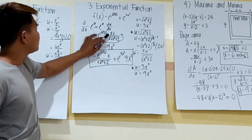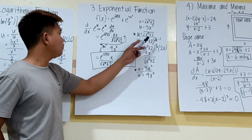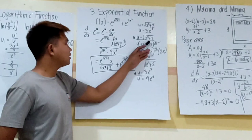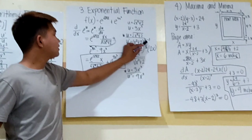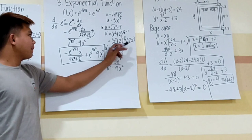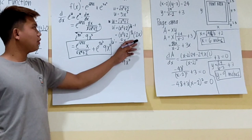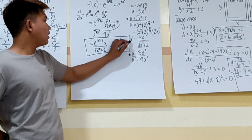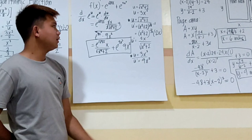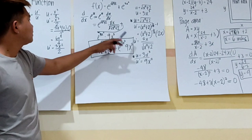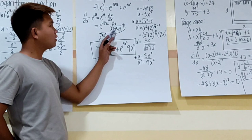We need to derive the first u, which is the square root of (x² + 2). Using the power rule, u prime equals (x² + 2) raised to the 1/2 minus 1, which gives (x² + 2) raised to negative 1/2, times the derivative of x², which is 2x. Simplifying, we get 2x over the square root of (x² + 2). That is the first u prime. Substituting: 2x all over x times square root of (x² + 2).